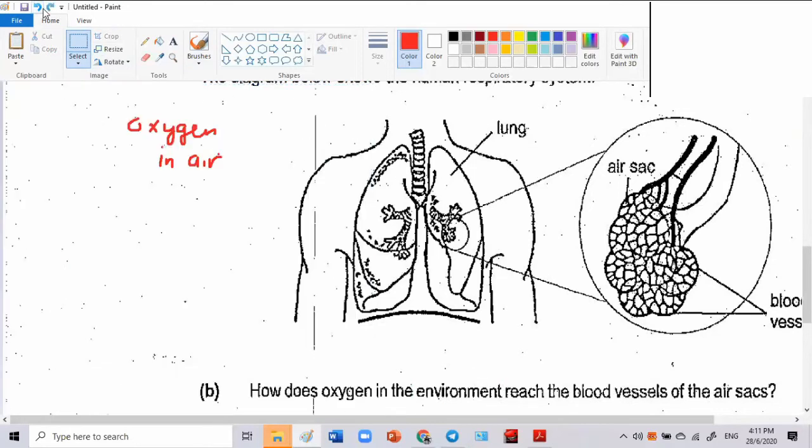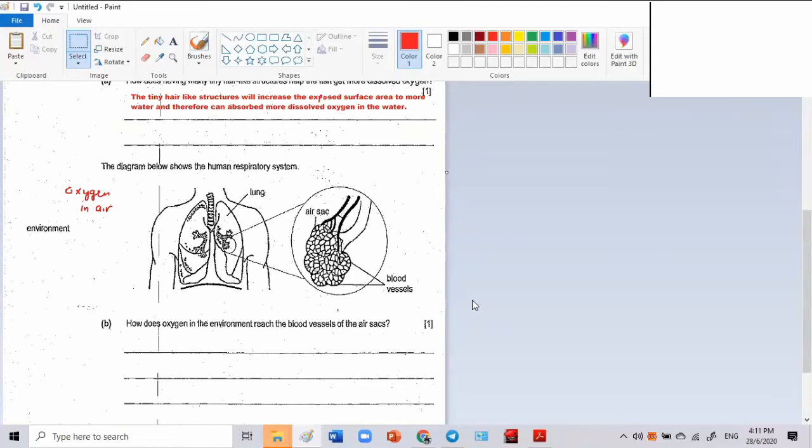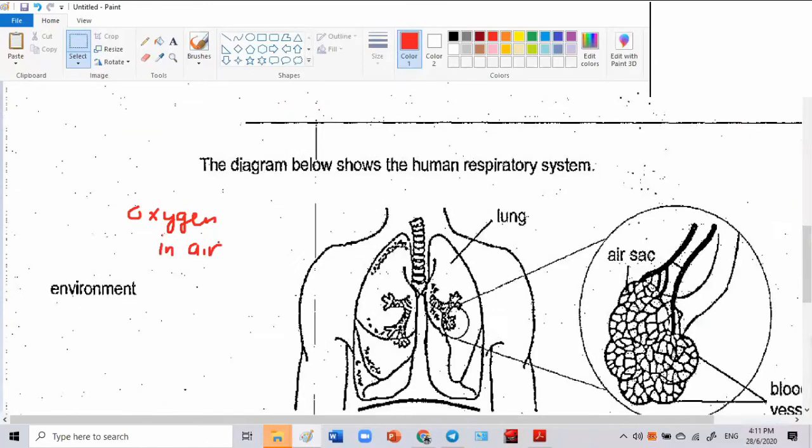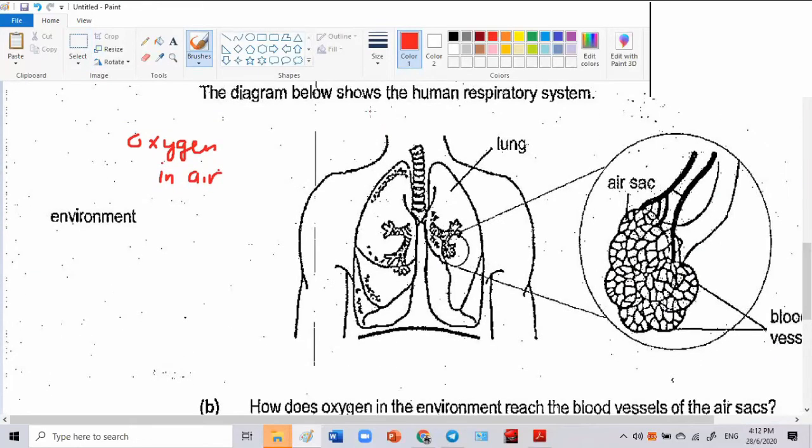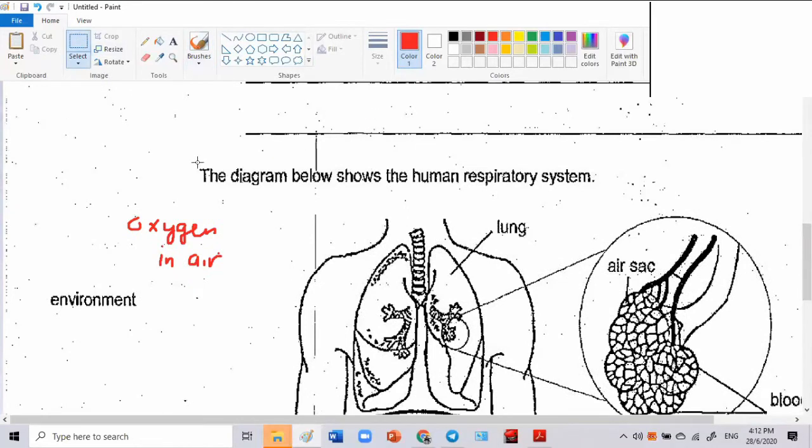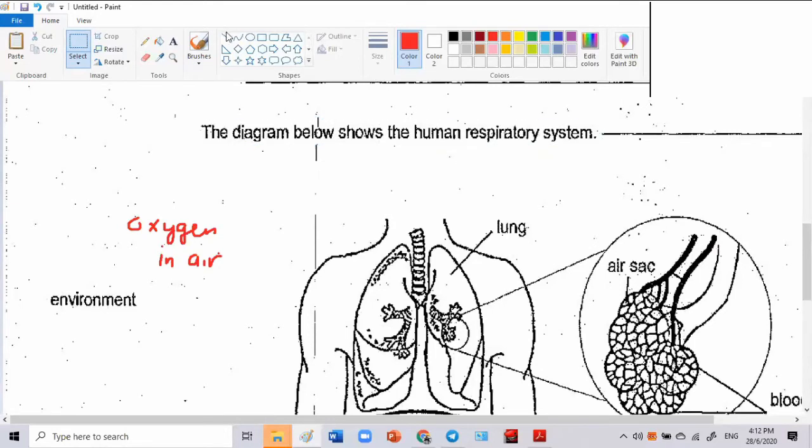Oxygen in the environment. Air enters the lungs through the nose. Oxygen transported through the wind pipe into air sac. It's absorbed into the blood vessel. Air enters through the nose. Because from the environment, it will go to the nose.